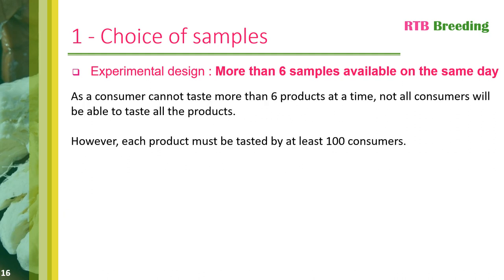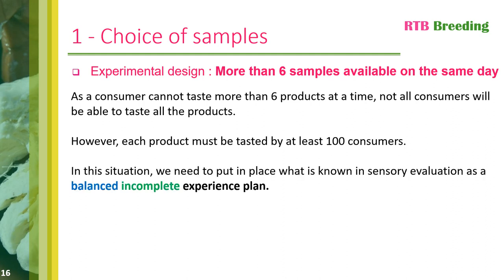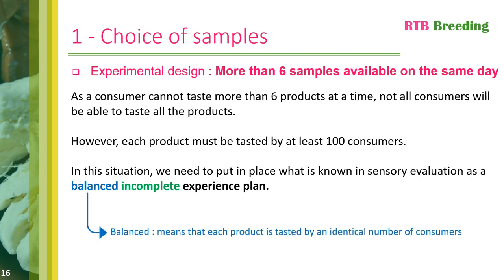Now we come to the third possible situation: where you want to analyze more than six samples at the same time. This choice is the one that will give you the best chance of obtaining reliable results and determining acceptability thresholds. As a consumer cannot taste more than six products in a consumer test, not all consumers will be able to taste all the products. However, each product must be tasted by at least 100 consumers. In this case, we will need to set up a precise and specific experience plan — called an incomplete balanced experience plan. Balance means each product is tasted by an identical number of consumers; incomplete means not all consumers taste every product.